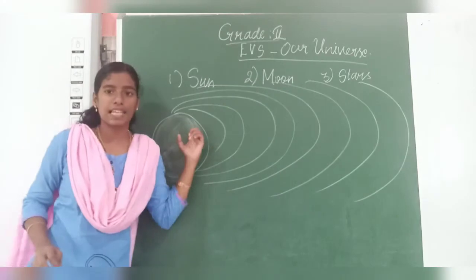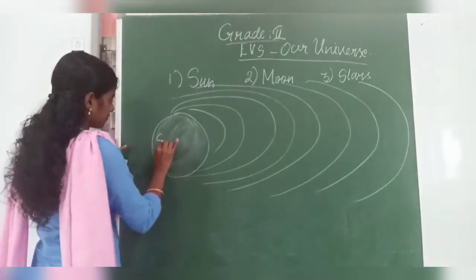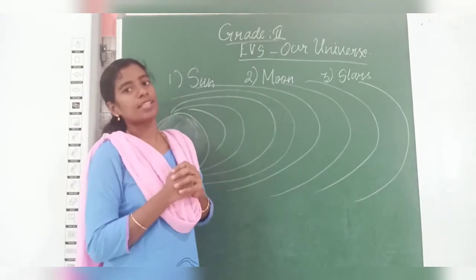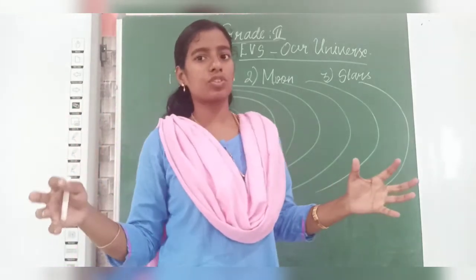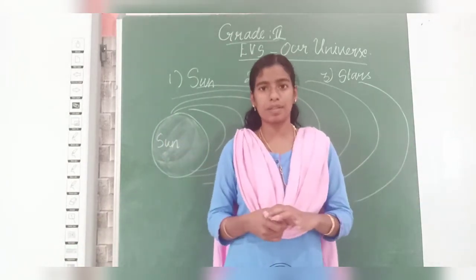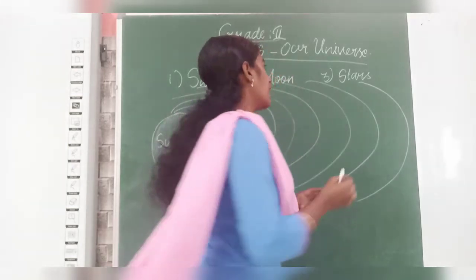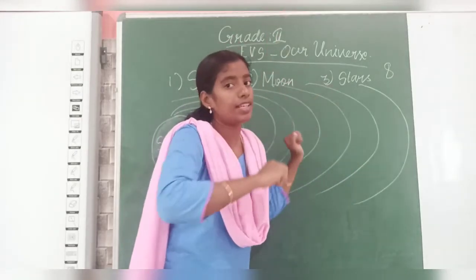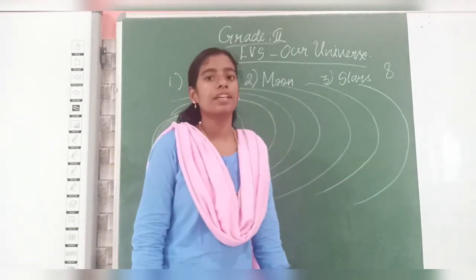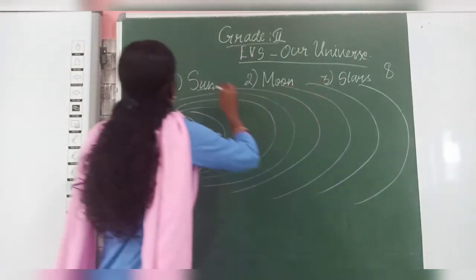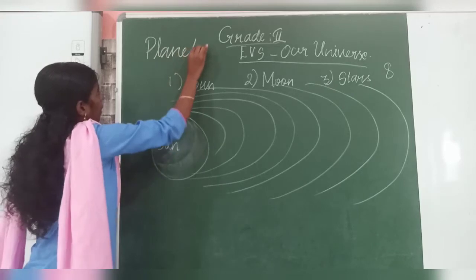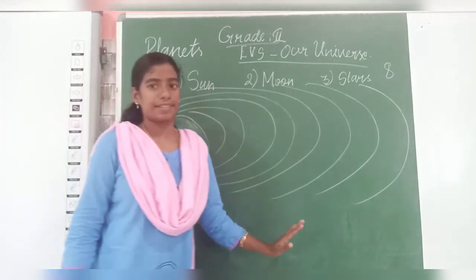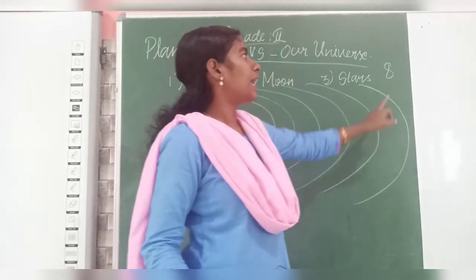The sun has some huge structures and bodies around it — like Earth, where we are living. There are eight huge bodies revolving around the sun. These huge bodies are called planets. So the huge bodies around the sun are called planets. How many planets are there? Eight planets.